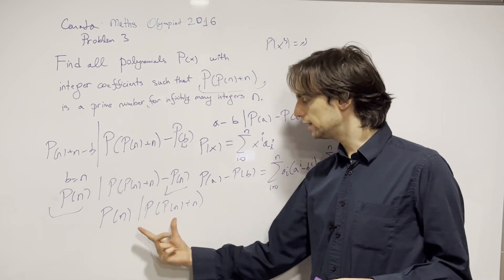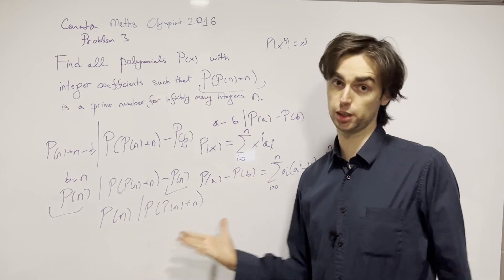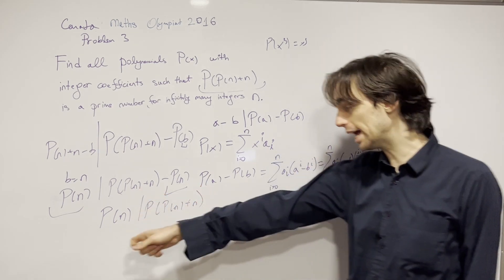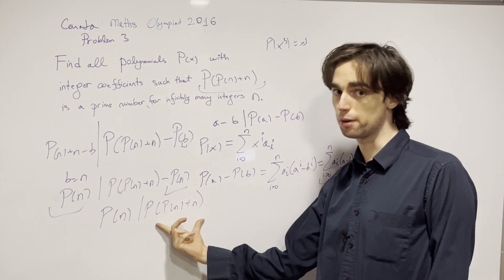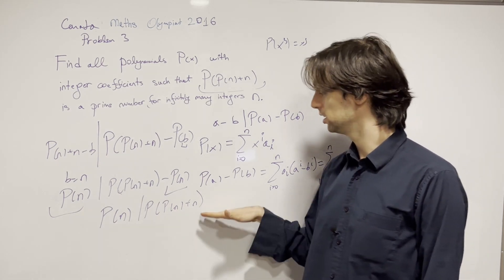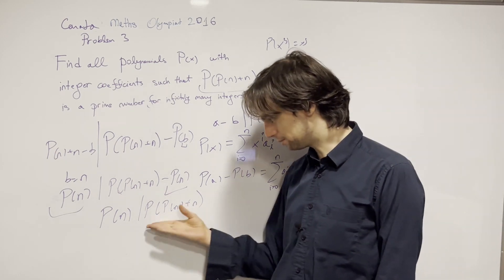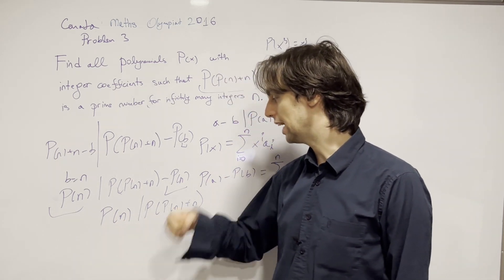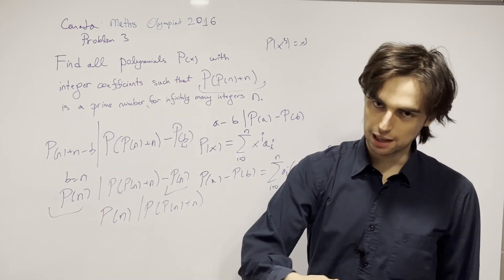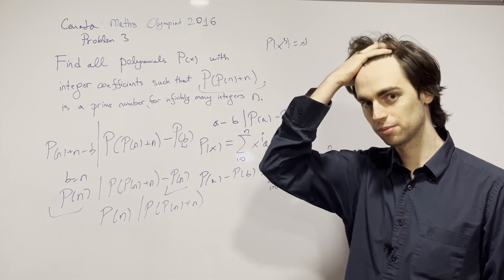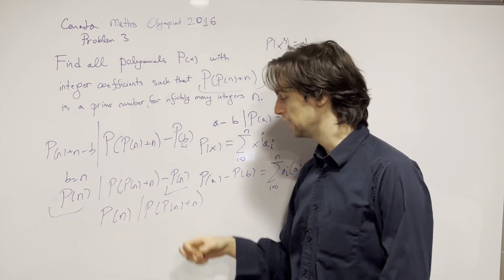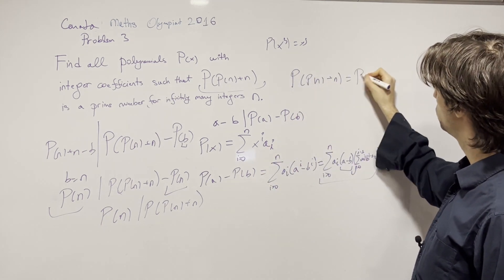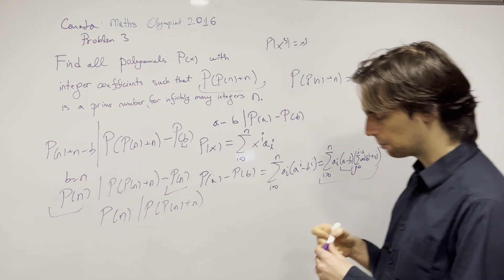Now what does this imply? This is also incredibly useful — I invite you to pause for five minutes and ask yourself why. The answer is: it's useful because our condition is that P(P(n)+n) is a prime number for infinitely many n. Since P(n) divides a prime, P(n) is either that prime, negative that prime, 1, or −1. Furthermore, this is always true, and we can actually write P(P(n)+n) = P(n)·q(n) for some polynomial q.